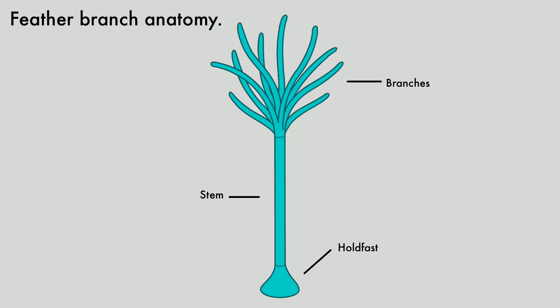Feather branches are composed of three parts: the holdfast, the stem, and the branches. The holdfast acts as a suction cup creating an air pocket underneath the organism to keep it anchored to the seabed.